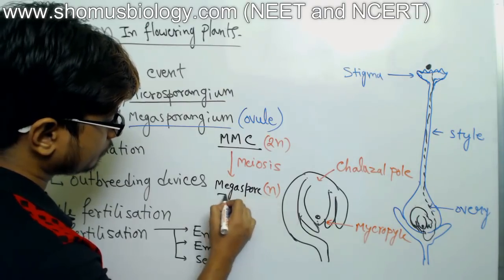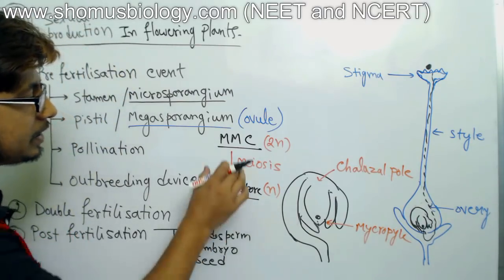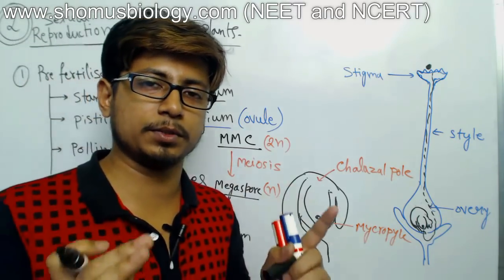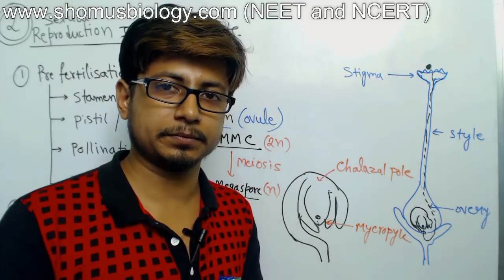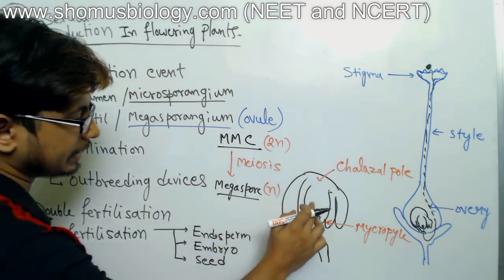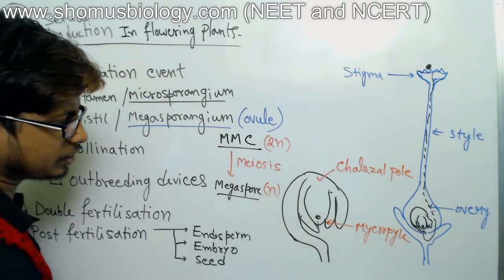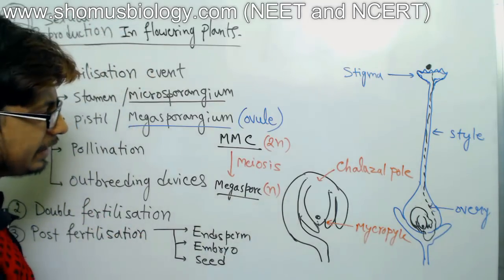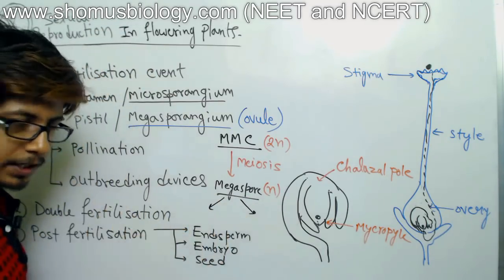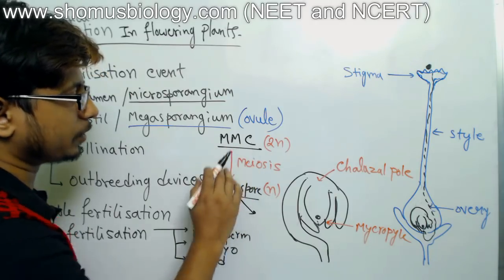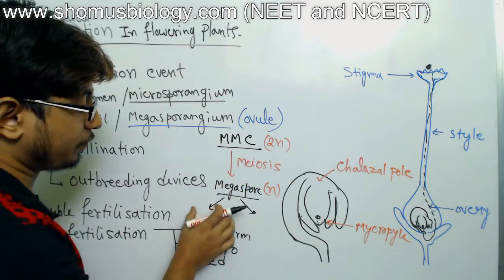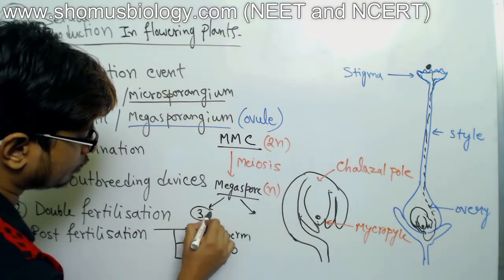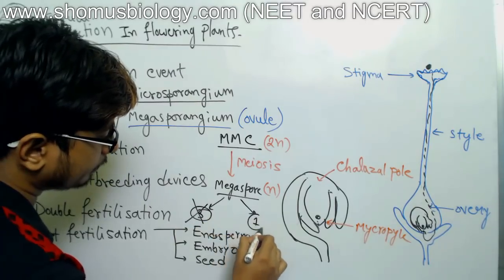The megasporangium mother cell produces megaspores — n-chromosome-containing cells. These megaspores are large cells. The MMC normally produces four such megaspores after division, because the megasporangium mother cell undergoes division to form four megaspores. Of these four megaspores, three of them are destroyed and only one is kept.